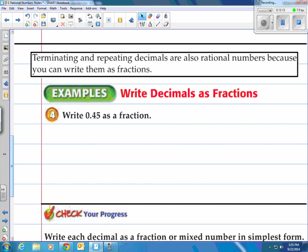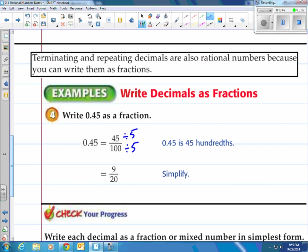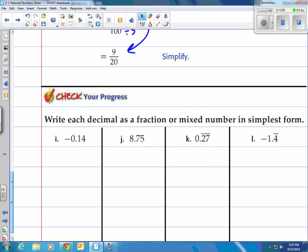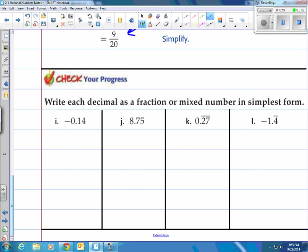Terminating and repeating decimals are also rational numbers because you can write them as fractions. How do you write 0.45 as a fraction? If you can read it without saying it in slang, then you got it. That is actually 45 hundredths. Notice how I said 45 hundredths. That means 45 over 100. So just take 45 over 100 and reduce that, finding common factors between 45 and 100, and you get 9 twentieths. Basically, what we did was we divided this by 5, and we divided this by 5. That's how you turn a decimal into a fraction. If you can say it, you can write it. Take a look at these four. Pause the video, come on back, see how you do.